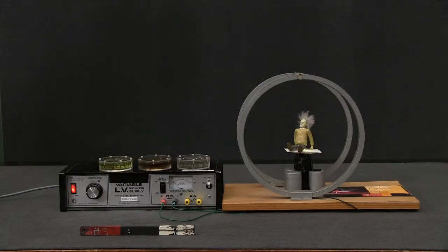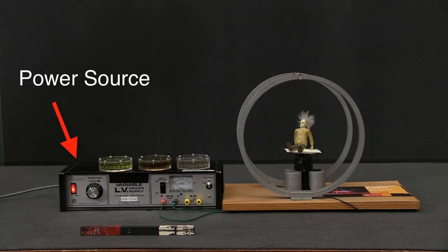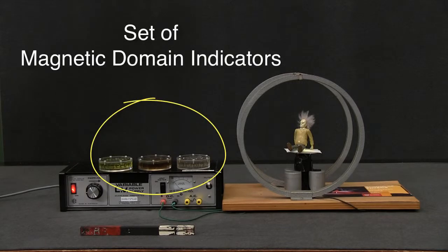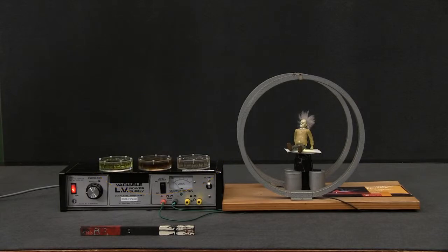So here is the setup for the nuclear magnetic resonance demonstration. The first thing I've got is a power source. The second thing is a magnetic domain indicator which is representing the spins in the hydrogen atoms in your body.